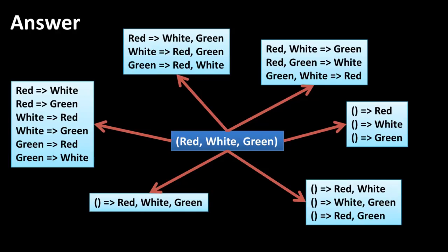And now when you think about transactions that have 20 items, just think about how many different rules there are to consider. When you consider thousands of such baskets, you're going to literally have hundreds of thousands or perhaps even millions of rules to consider. And what we're trying to do in association analysis is to identify the best of these rules that we can then exploit.